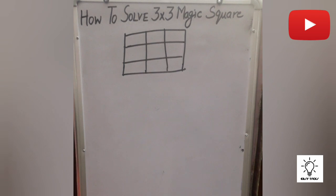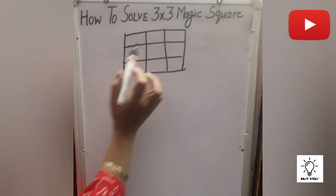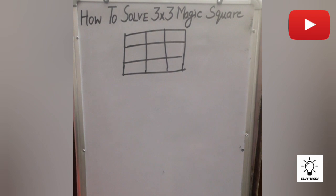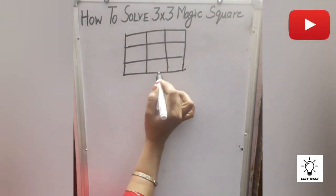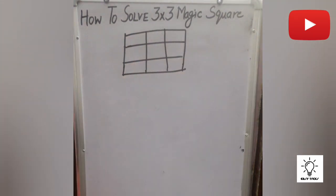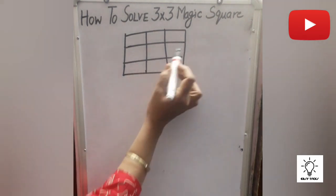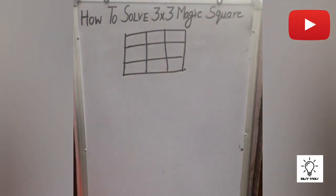Hello friends. In this video we are going to see how to solve a 3 by 3 magic square. A magic square has 3 columns and 3 rows, and when you add numbers row wise and column wise you will get the same number — that is the magic number.